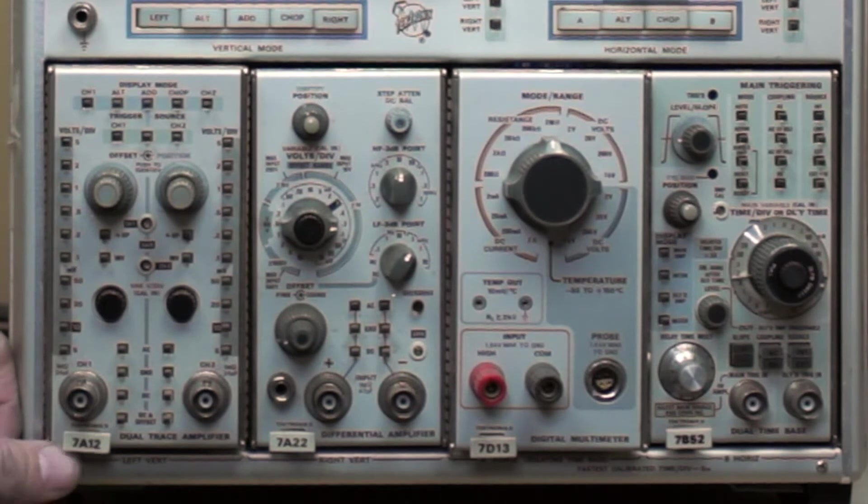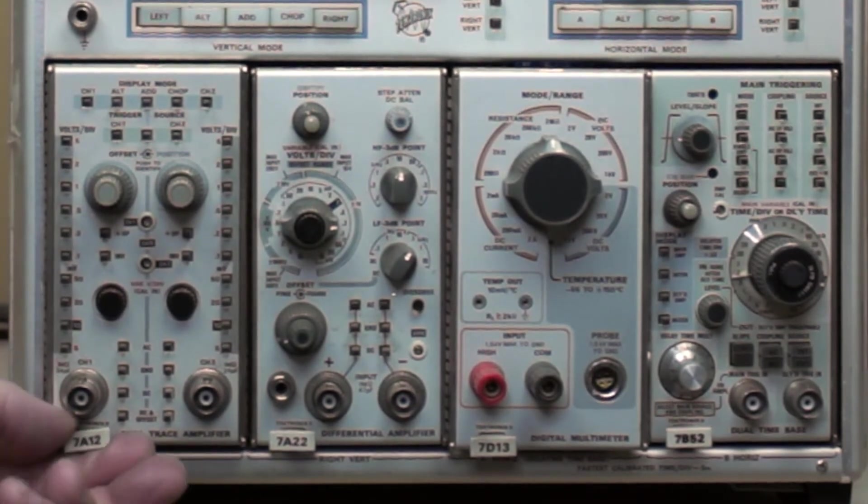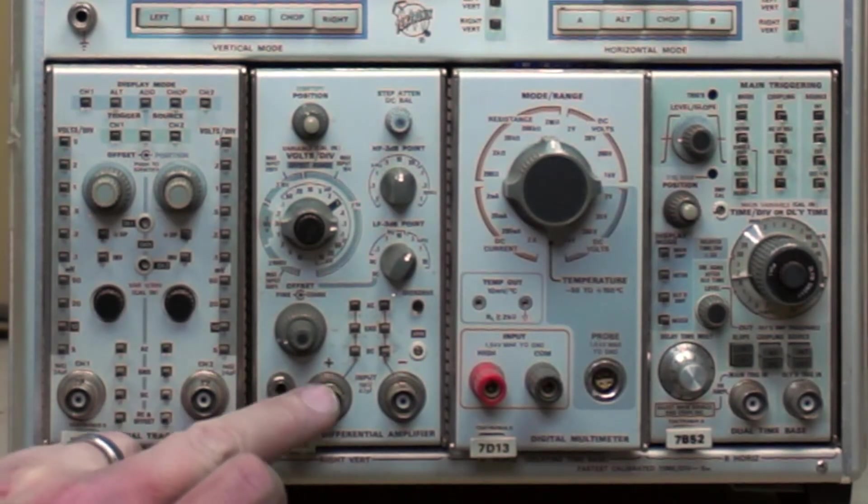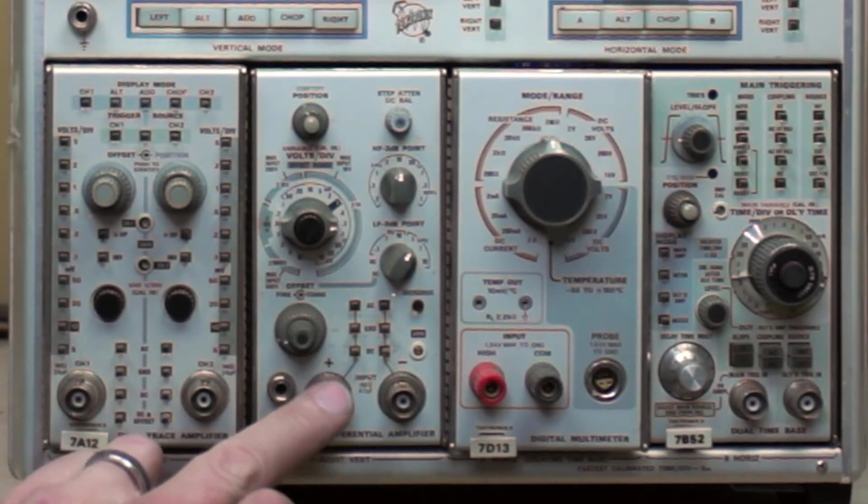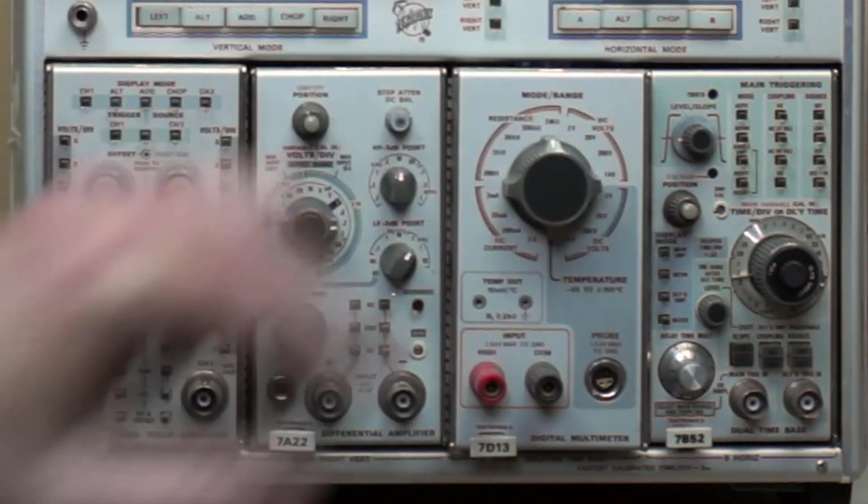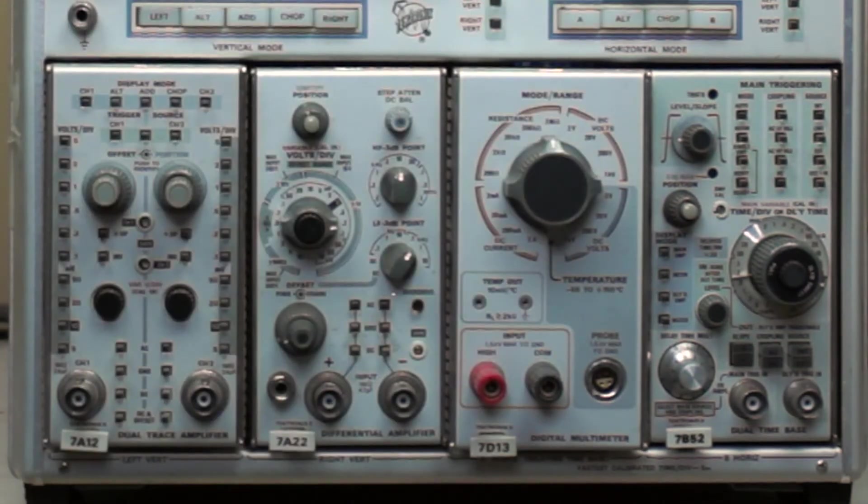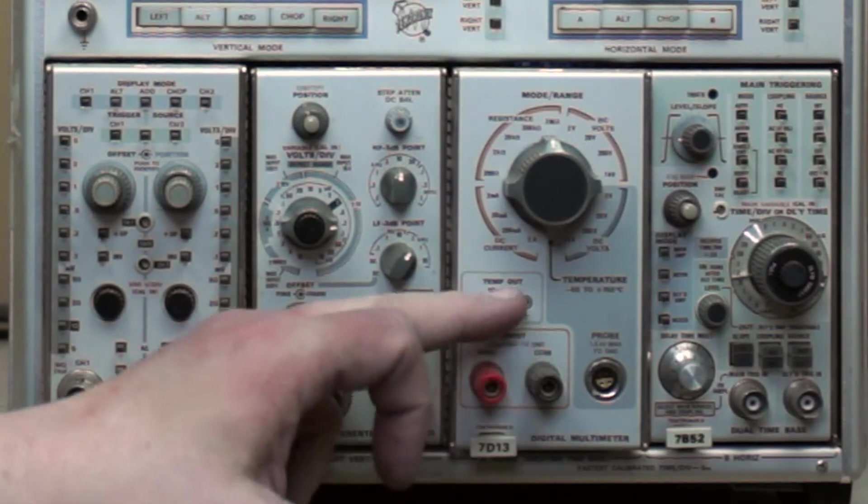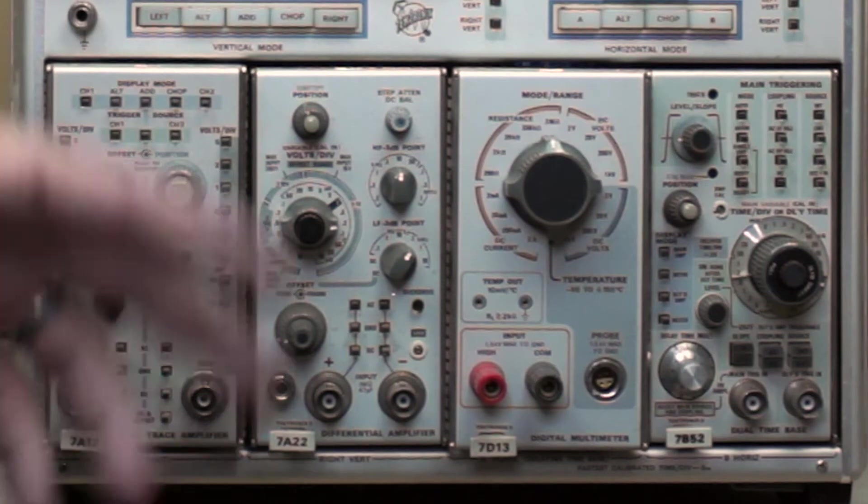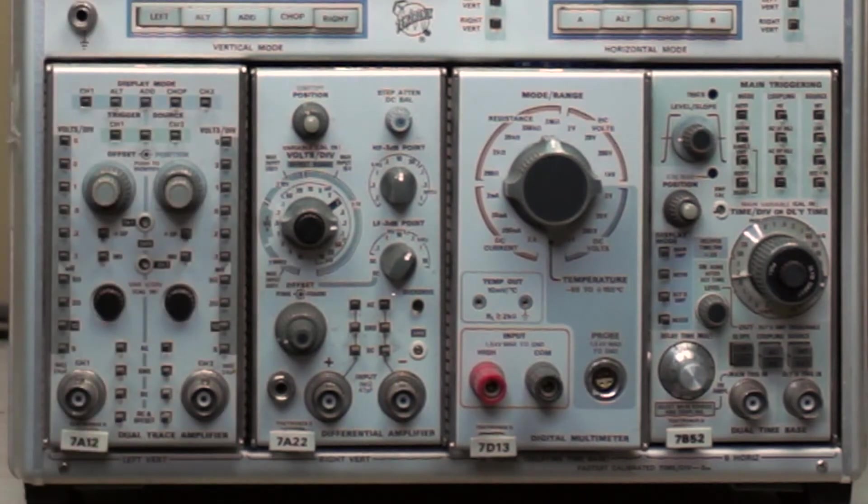With this scope it came with four modules: a dual trace amplifier, a differential amplifier which is a lot of fun and pretty valuable, a voltmeter which is really exciting so I should be able to use this voltmeter and see the voltages on the screen.